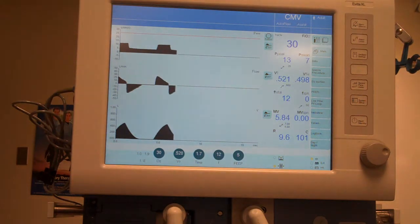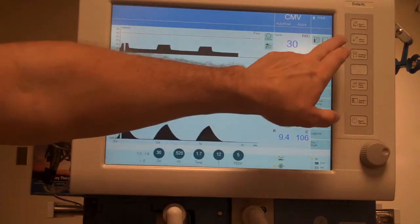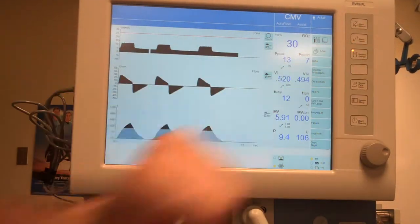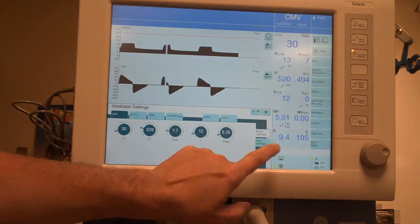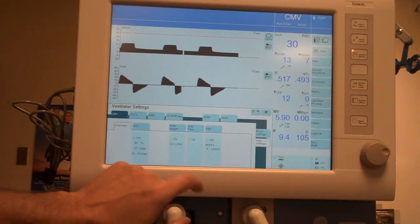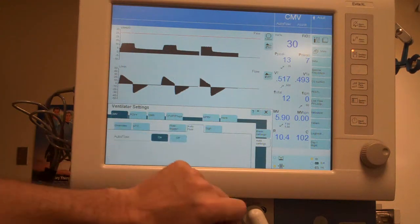To measure the static compliance, you again need a square wave flow pattern with a plateau being applied. So in this case, we are going to need to go into our vent settings and change the additional settings by turning off the auto flow.